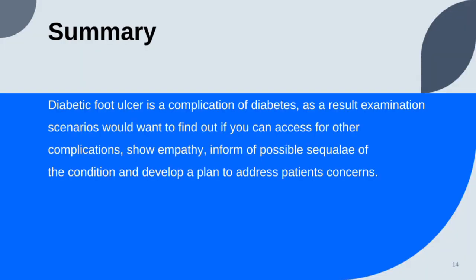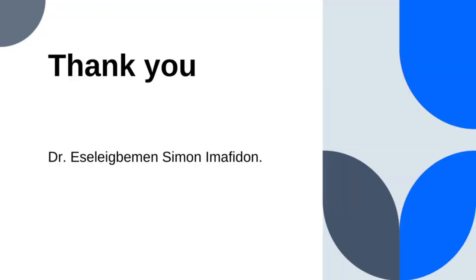In summary, know that diabetic foot is a complication of diabetes, so you are not expected to be asking when they were diagnosed with diabetes or about polyuria and all of that — go straight to the complaint and ask about it. However, if they expressly state that the patient is not diabetic but is coming with an ulcer, then you want to ask if they have any symptoms suggesting diabetes. They want to see how you can show empathy, inform the patients of possible sequelae that can occur, and address their concern at the same time. I hope this has been helpful. Thank you very much.